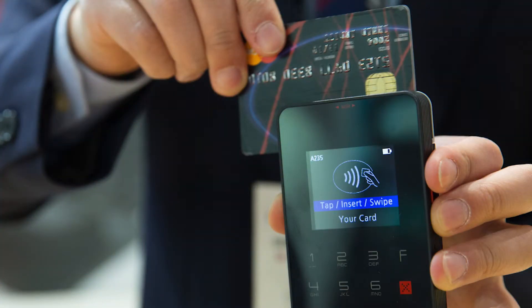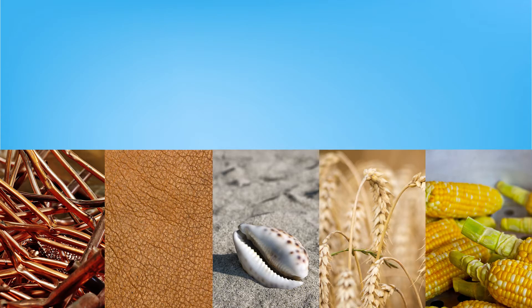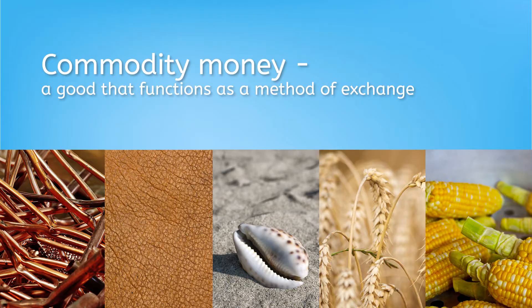Before the digital age brought computers and electronic payment, all forms of financial exchange were physical. Most ancient civilizations and tribes had at least one item that they found highly valuable — pieces of metal, scraps of leather, shells, or crops like wheat or corn. These are known as commodity money, because their value is in being a commodity or a good that can be exchanged for others. Metal and leather were valuable because they could be used to make things. Shells could be used to make jewelry, and wheat and corn were valuable because, well, who doesn't need food?